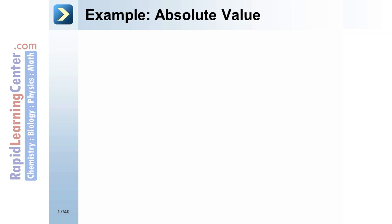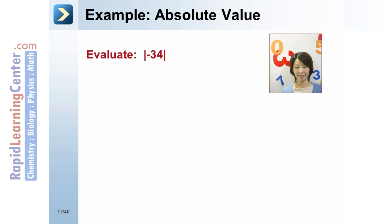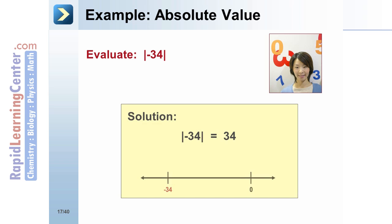Example — Evaluate the absolute value of negative 34. Solution: The absolute value of negative 34 is 34, because the number is 34 units from the origin 0.